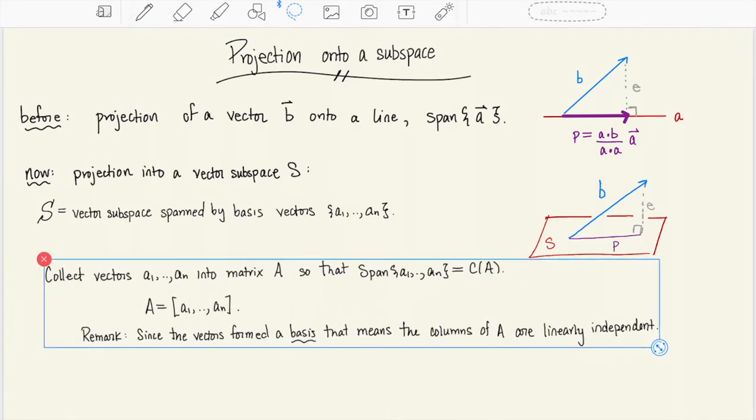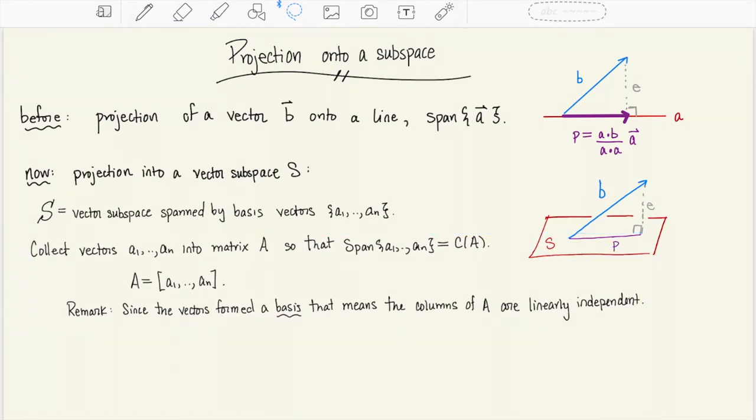Well what we're going to end up doing is taking those vectors a1 through an and collecting them together into the columns of a matrix A. In fact the span of those vectors a1 through an is exactly the column space of the matrix A. That's what it means to be the column space. It's the span of the columns.